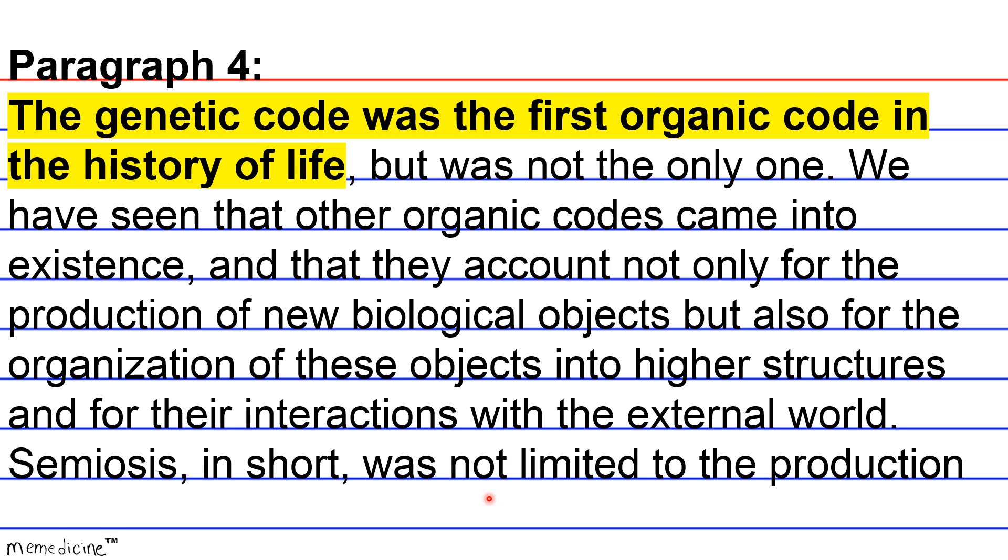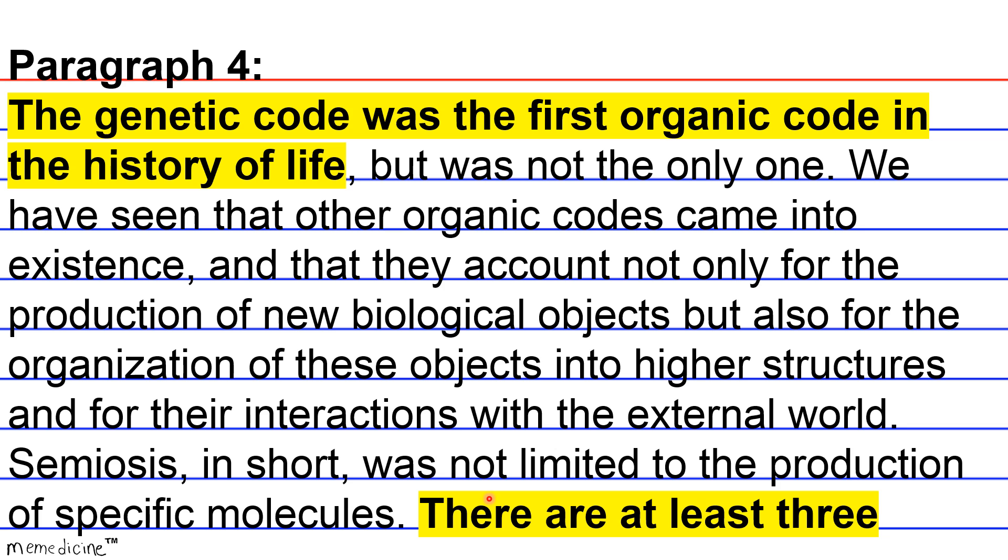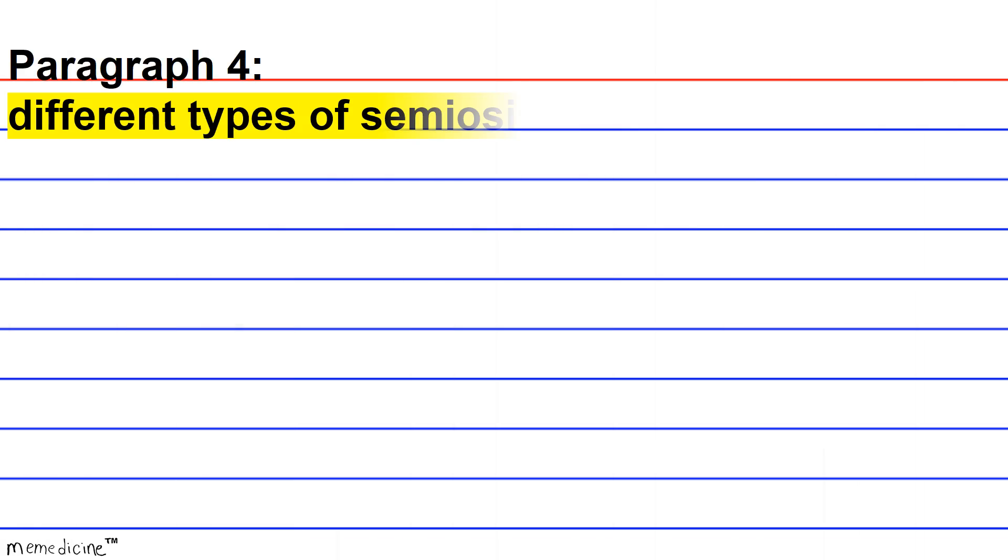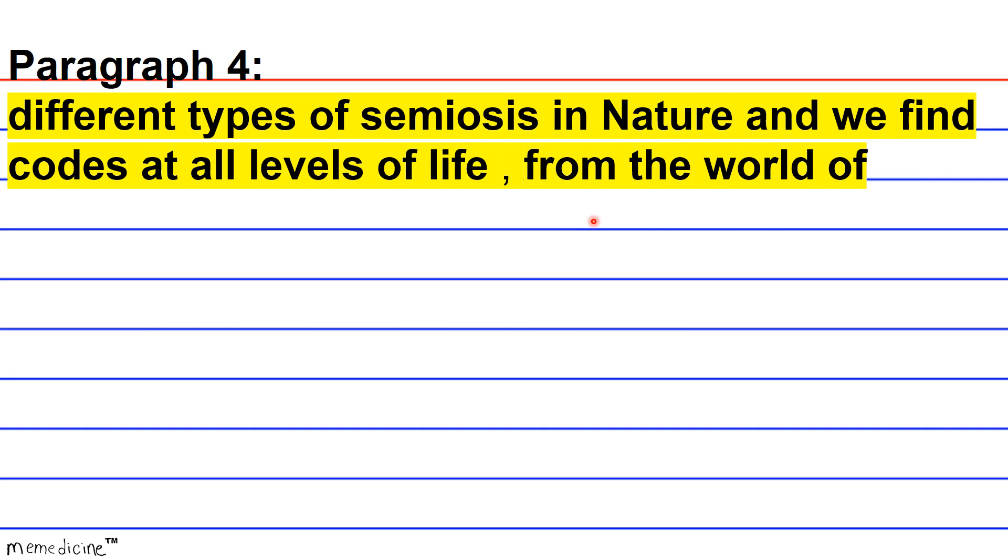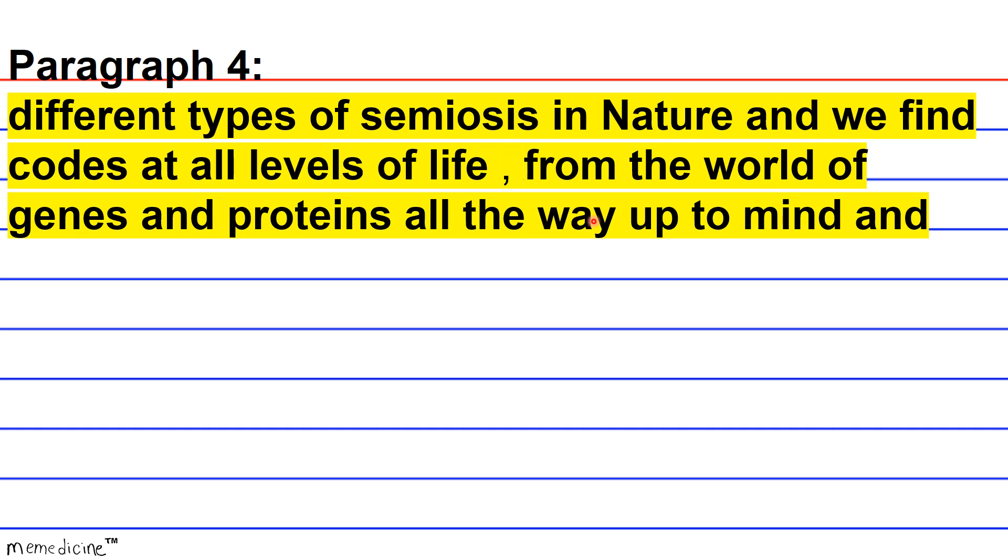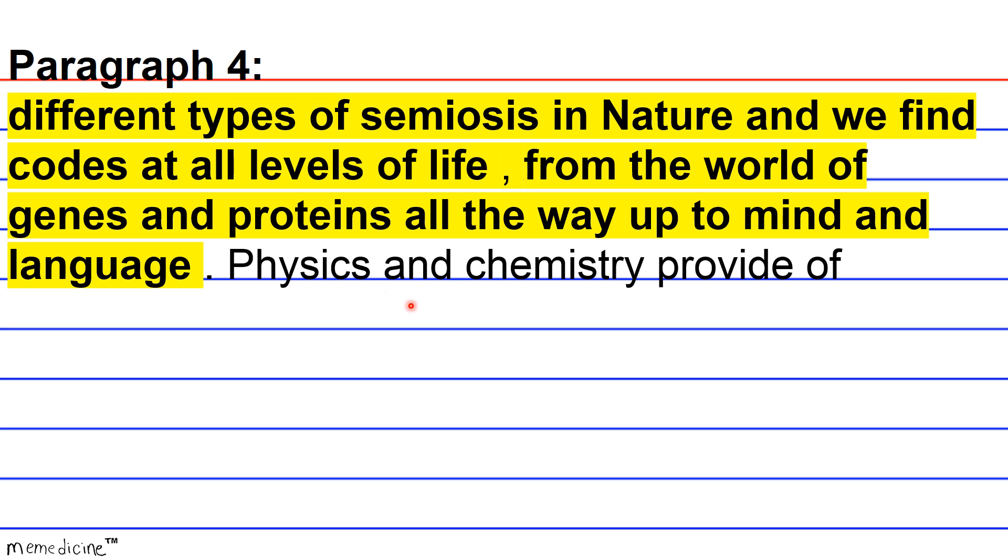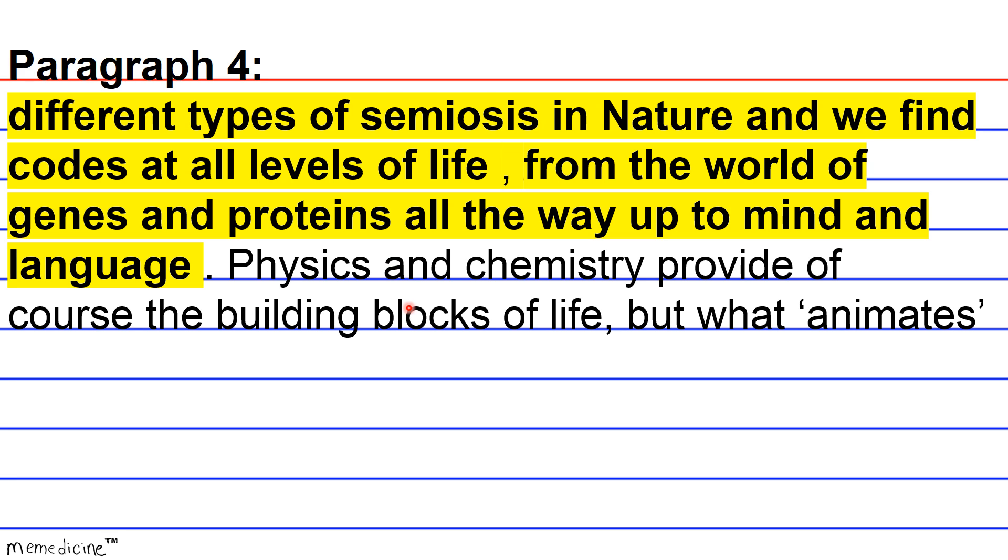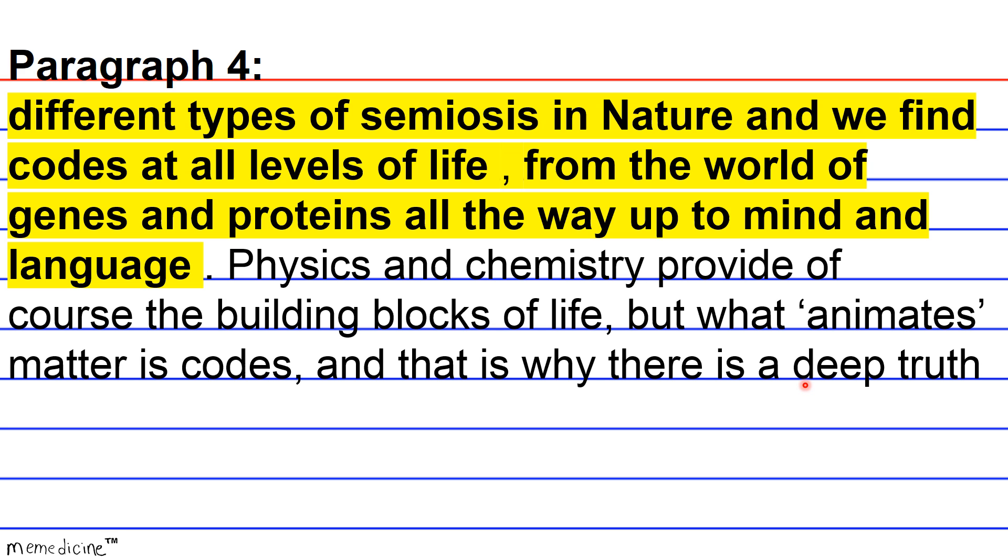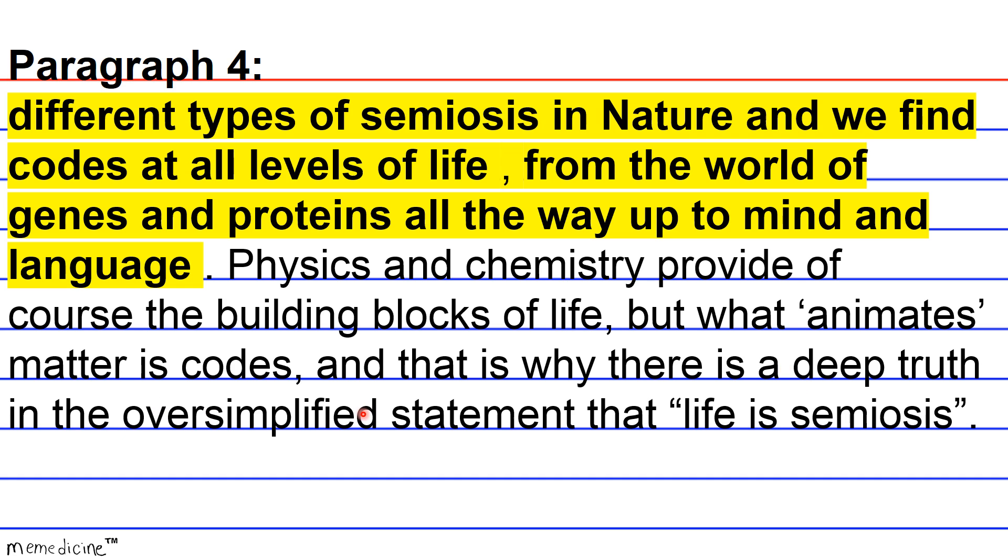Semiosis, in short, was not limited to the production of specific molecules. There are at least three different types of semiosis in nature, and we find codes at all levels of life, from the world of genes and proteins all the way up to mind and language. Physics and chemistry provide, of course, the building blocks of life, but what animates matter is codes, and that is why there is a deep truth in the oversimplified statement that life is semiosis.